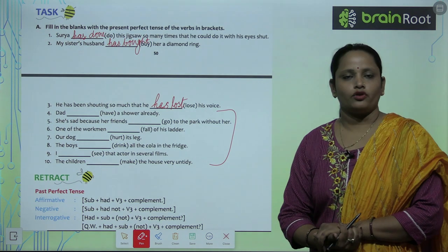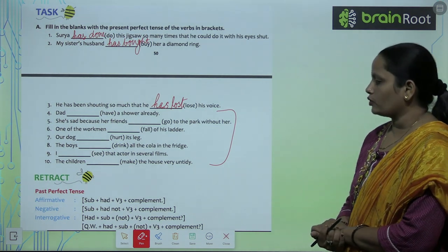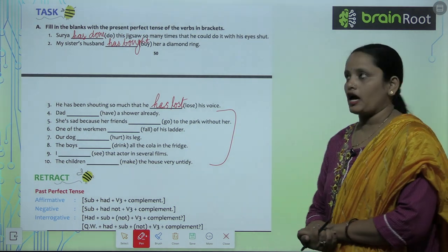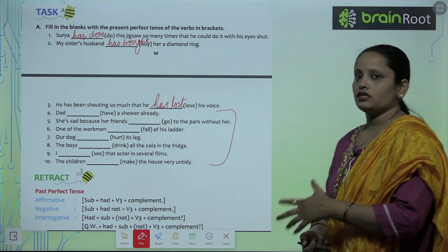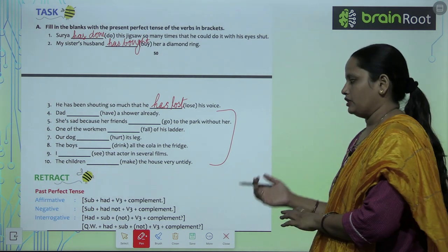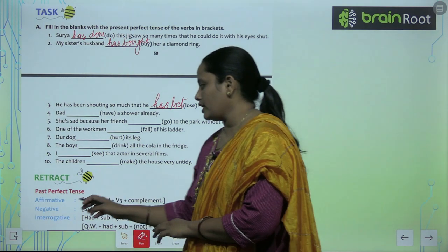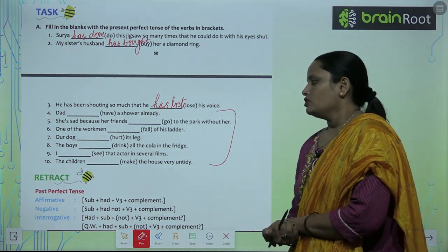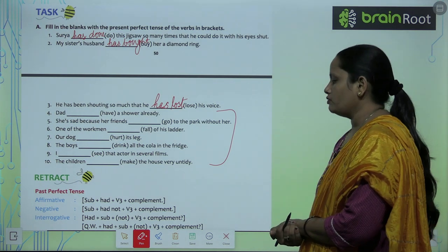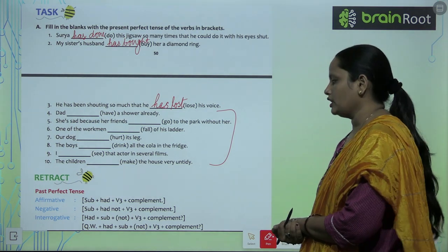Like this, complete the rest of the questions. Now the next topic we are going to learn is past perfect tense. In present perfect we use has/have and verb's third form. In past perfect, it is also divided into three parts: affirmative, negative, and interrogative. The rule for affirmative sentences is: subject plus had plus verb's third form and then complement.